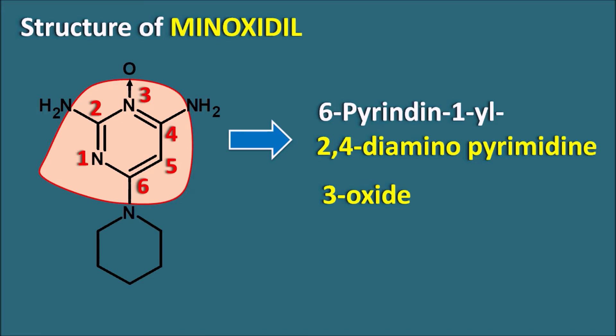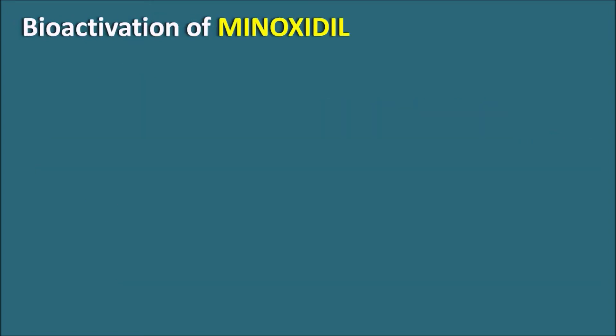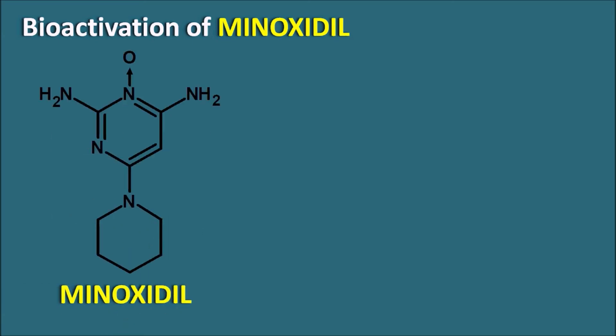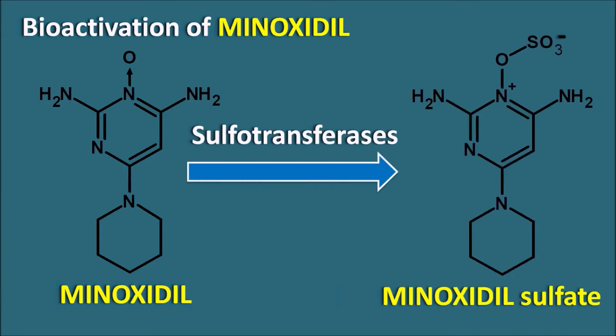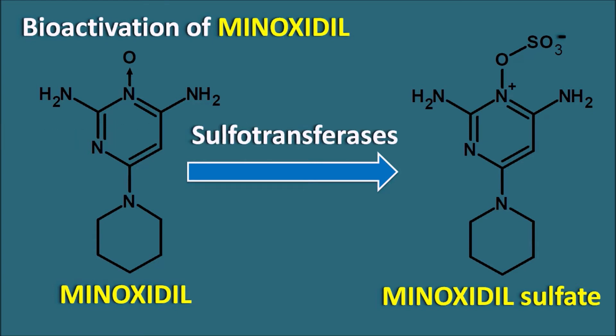This drug is a prodrug and requires bioactivation. Minoxidil has an oxide group at the third position, which can be sulfonated to produce the active metabolite Minoxidil sulfate. This reaction is mediated by the enzyme sulfotransferases, which transfer the sulfate group to the oxygen of Minoxidil. Minoxidil sulfate is the active metabolite responsible for the vasodilatory actions.